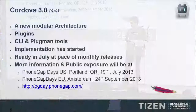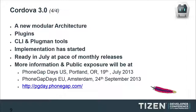Cordova 3 is a new modular architecture where everything will be plugins, including the legacy Cordova APIs. The implementation has already started and uses a command line interface tool, CLI, along with a tool called Plugman that gathers the plugins in your project. It should be ready in July, and you can get more information at PhoneGap Days in Portland, Oregon in July, with a replay in Amsterdam in September.